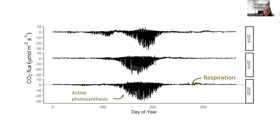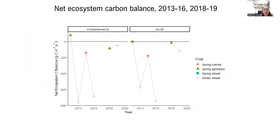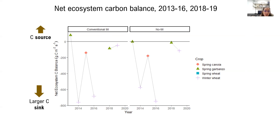Summing up fluxes over the course of an entire year, we get a single value representing the net loss or gain of carbon by the system. This figure shows the net ecosystem carbon balance for several years from 2013 through 2019. Where we're missing data, we didn't have a complete flux record or finalized yield values. First, most of these values are negative, meaning the system was a large carbon sink in all but a single site-year. In that one year where we emitted carbon, it was the garbanzo rotation, which doesn't have a lot of biomass.